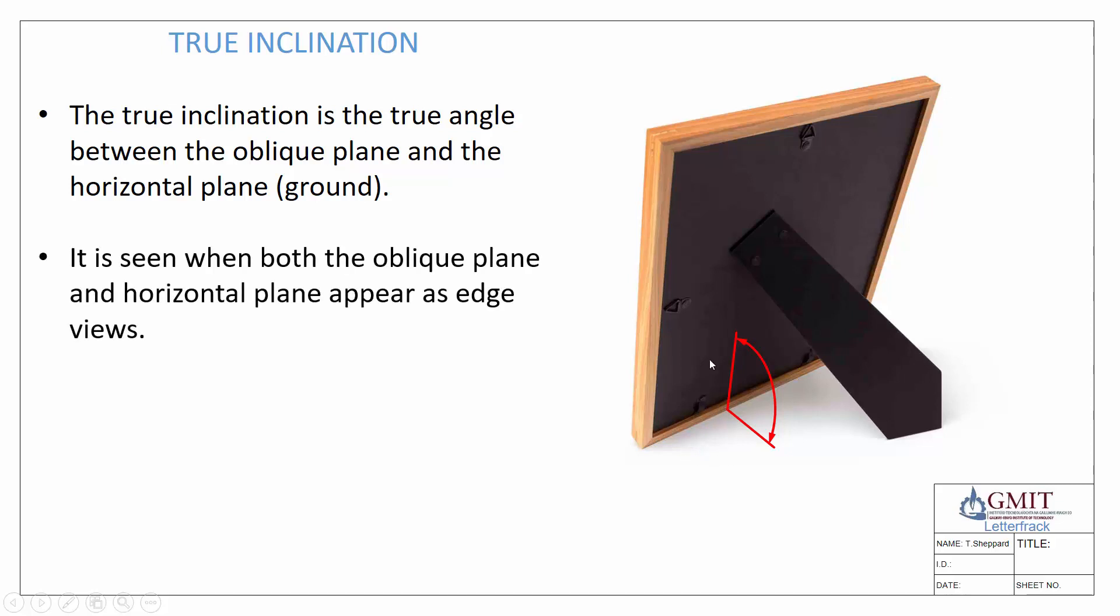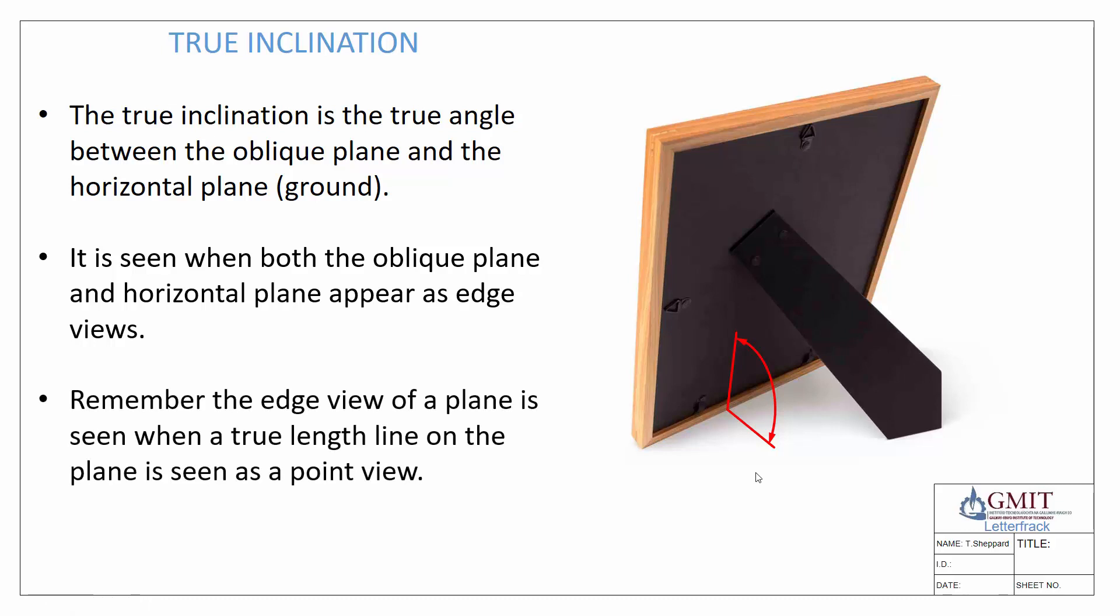Now our true inclination is always seen when we see both the oblique plane and the horizontal plane as an edge view. So both must appear as an edge view at the same time. A point to remember: when we see the edge view of a plane, we must see a true length line on the plane as a point view.